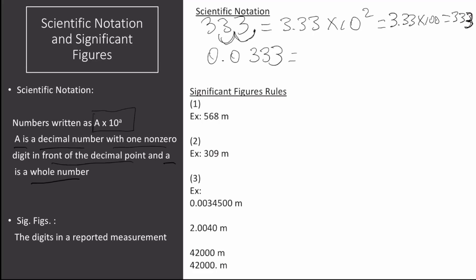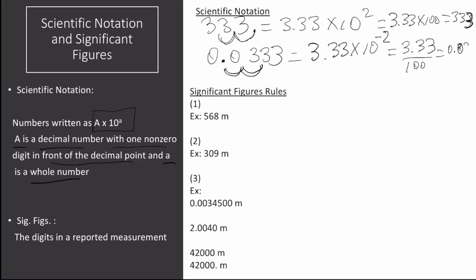For the second case, start from the dot that is already there and move 2 times — 1 and 2 — in order to get a number that is between 1 and 10. This gives you 3.33 times 10 raised to a negative power of the times that you move to the right, which is 2. Notice that this can also be rewritten as 3.33 divided by 100, which should give you back your original number.